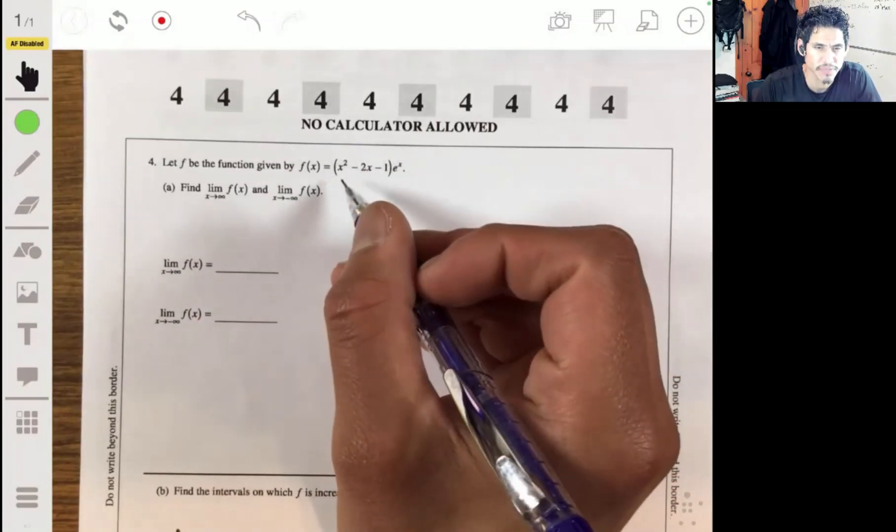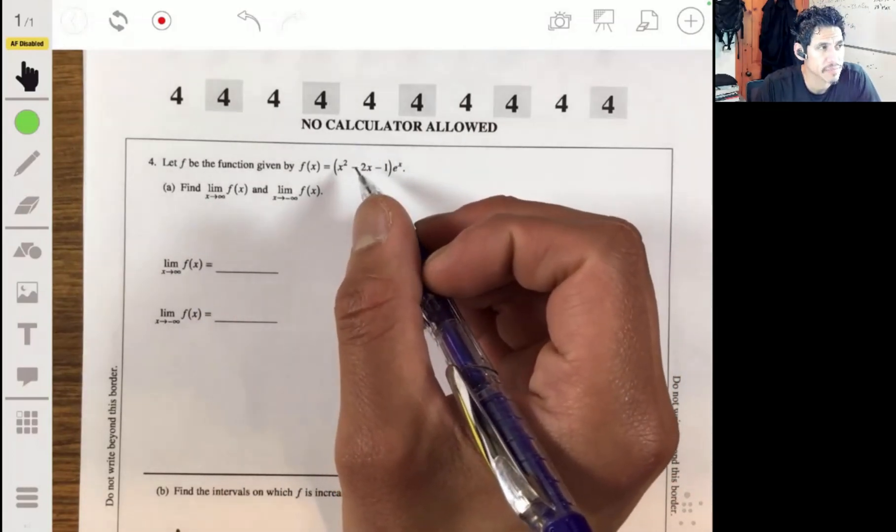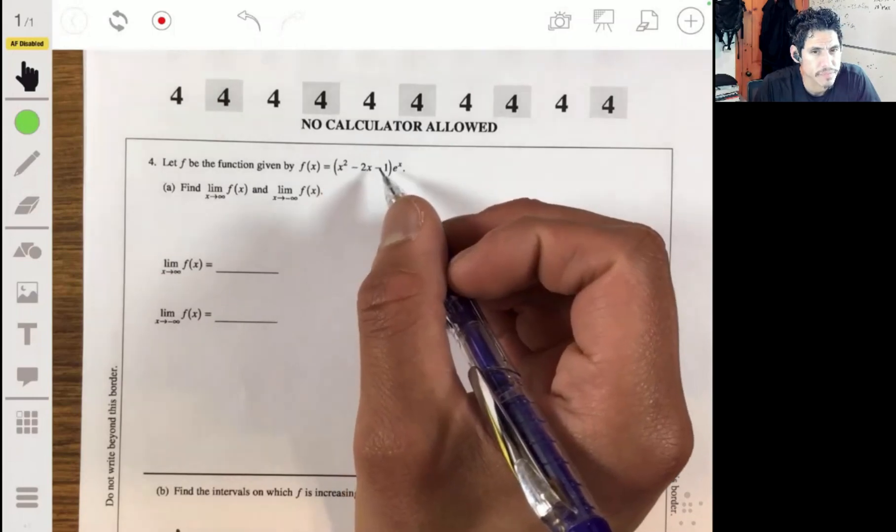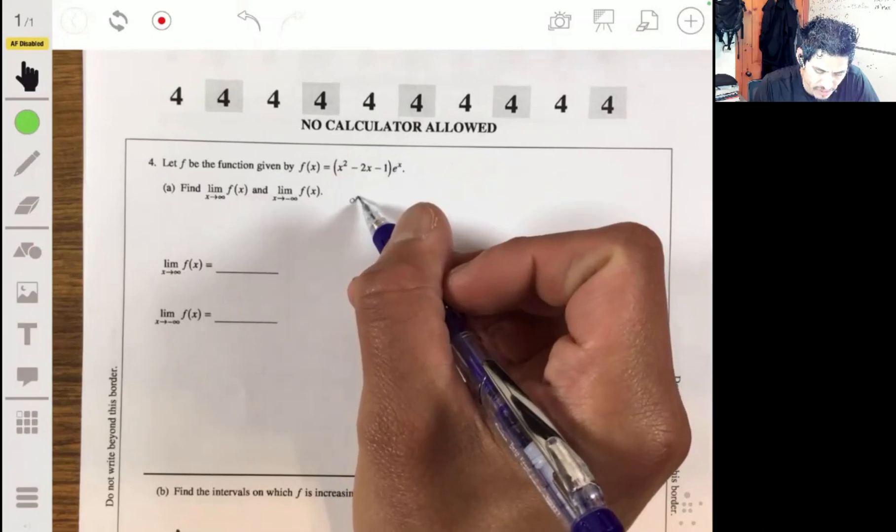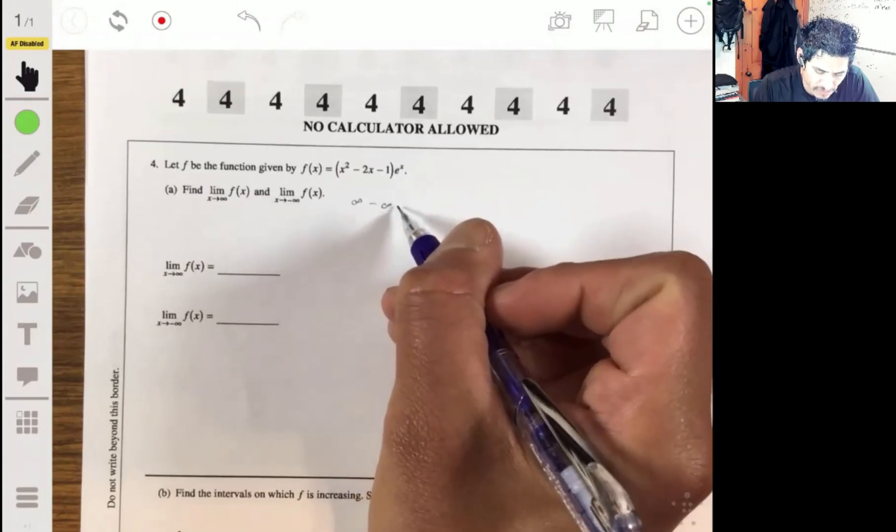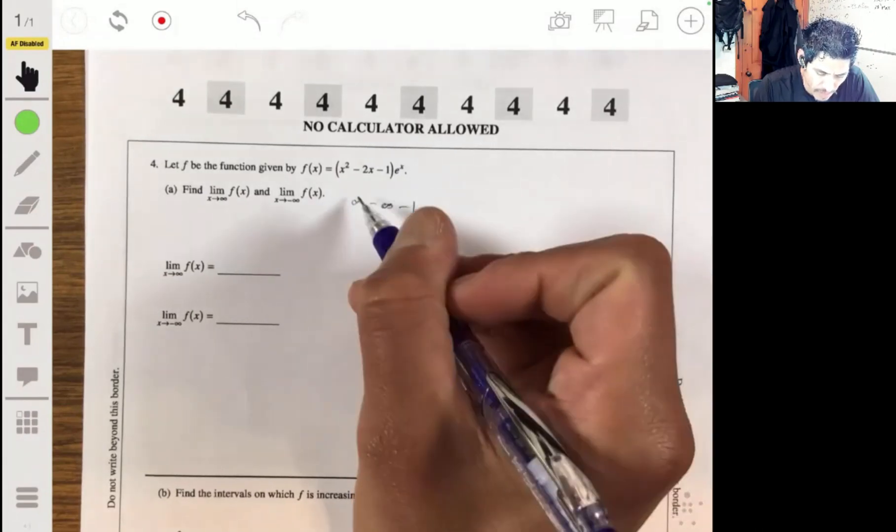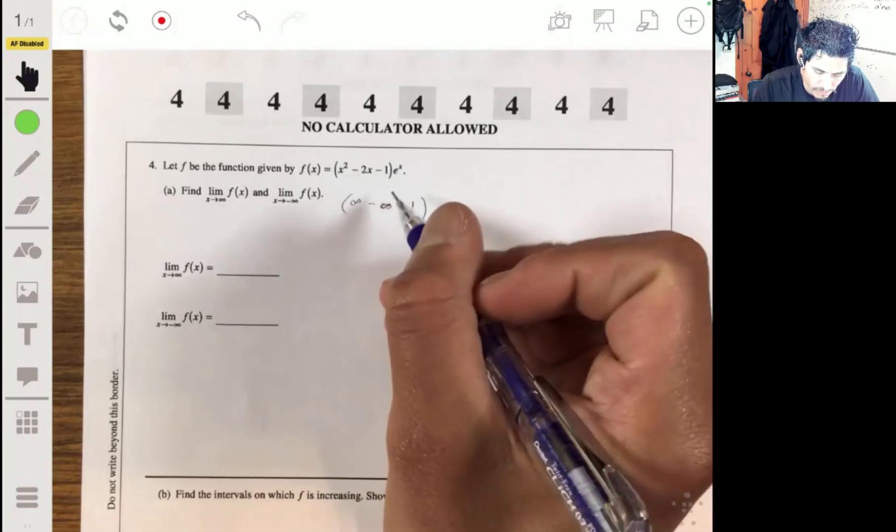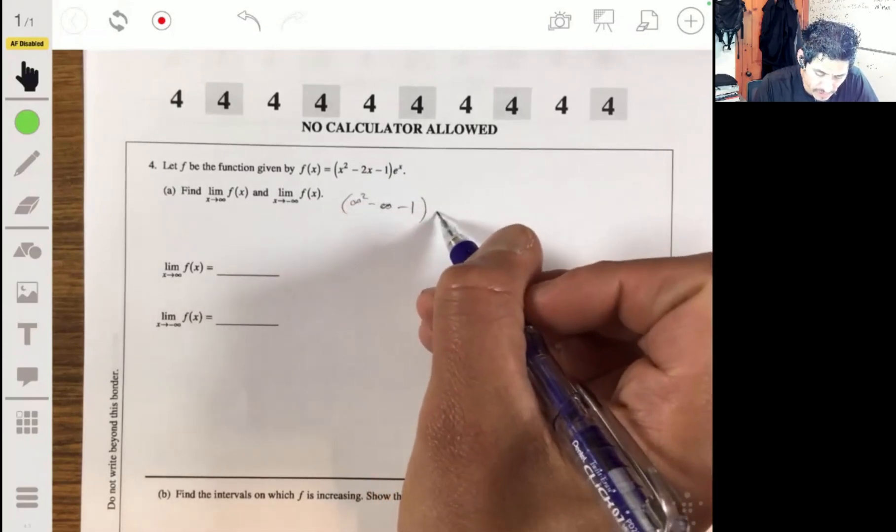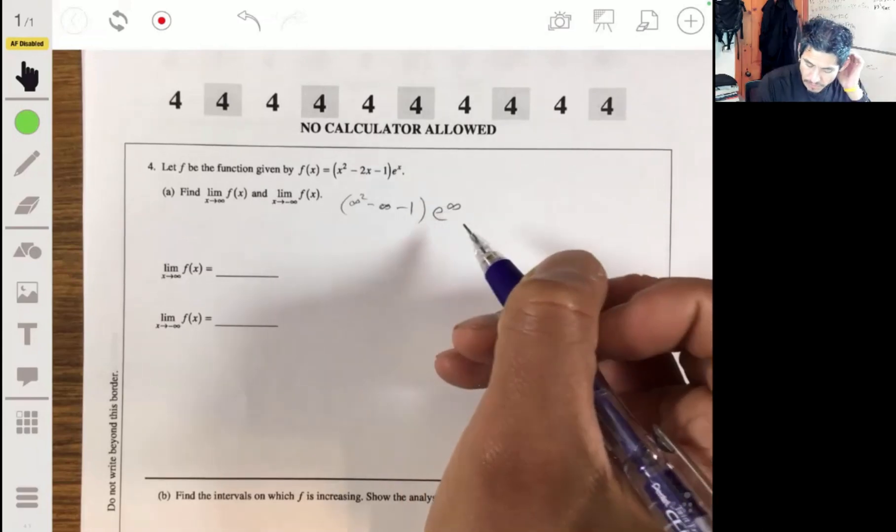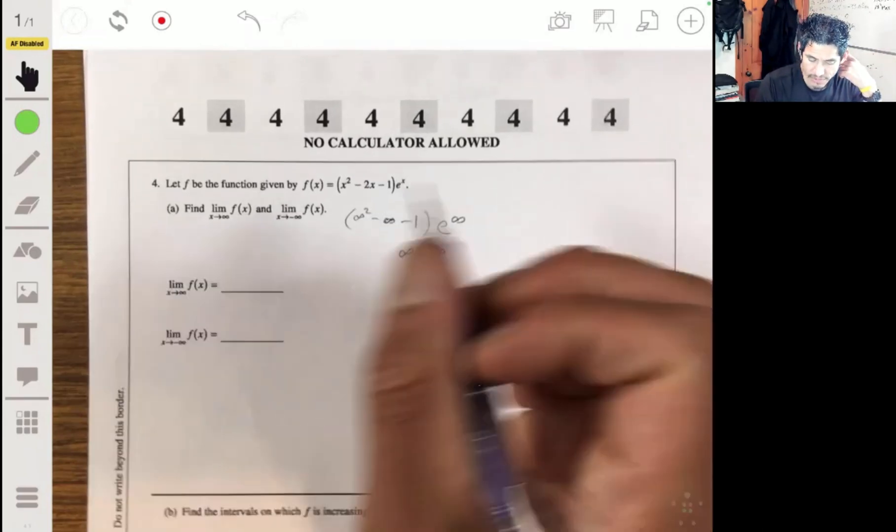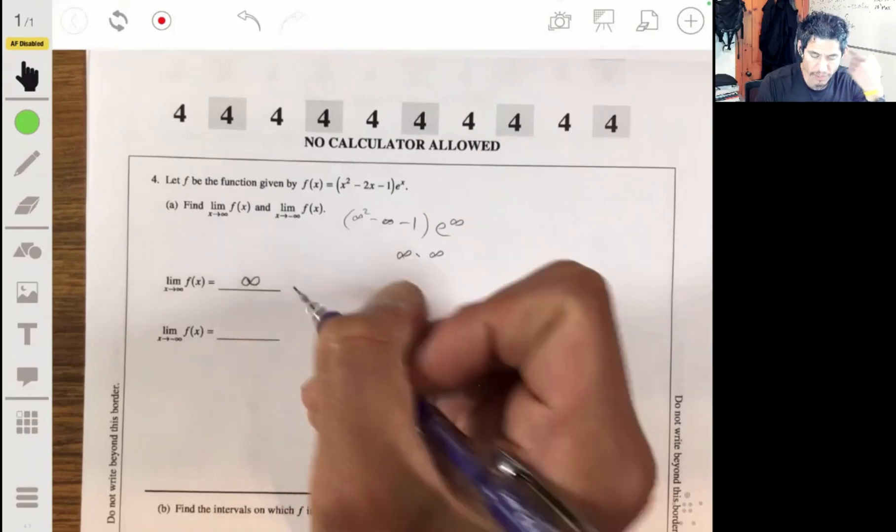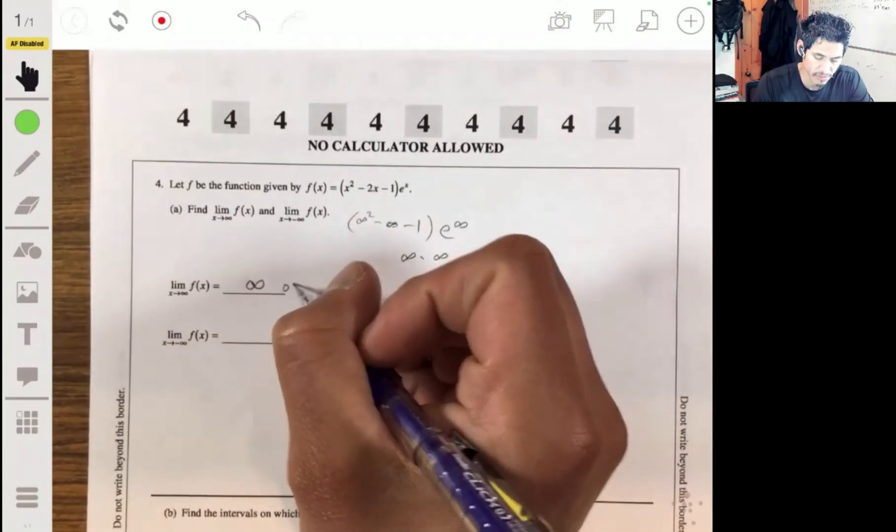So if we got positive infinity thrown into these x's, we're going to get a very large number. We're going to get basically infinity minus infinity minus one. Well, infinity squared, two times infinity, e to infinity. You're basically just going to get infinity times infinity, you're going to get infinity here. Or you can write it does not exist, either one is correct.